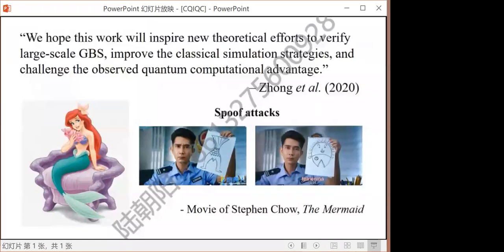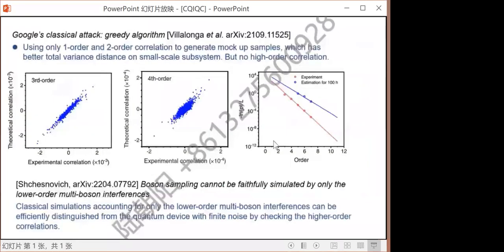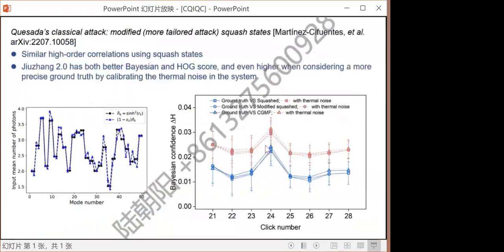Indeed, there are a lot of interesting classical algorithm improvements and spoofs. One is from Google. The idea is to artificially generate mock-up examples based on only one-order and two-order correlations. They have shown better total variation distance on small scale subsystems, but didn't show high order correlation, as an example, and also didn't show for larger systems. We are also making progress in improving the calibration of the metrics. Hopefully, it will beat this mock-up.